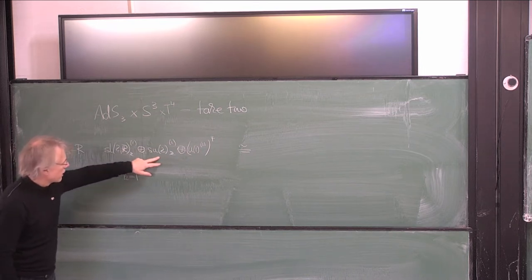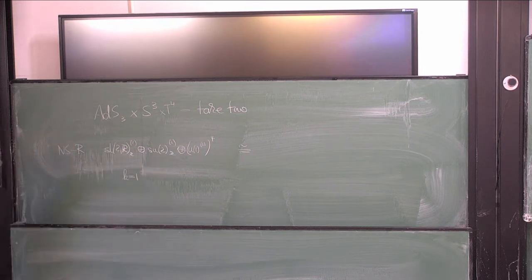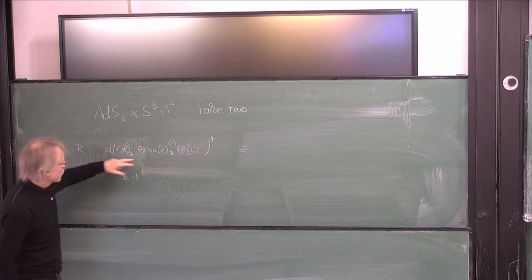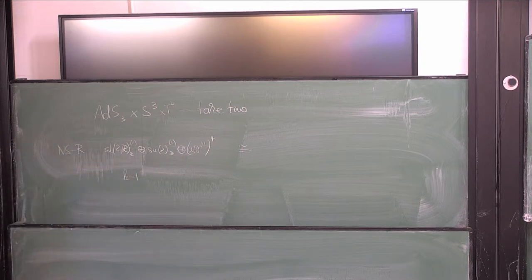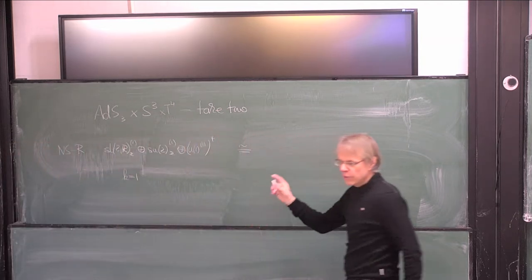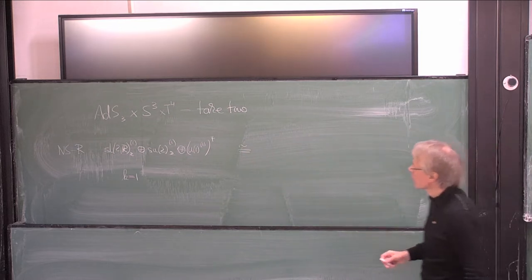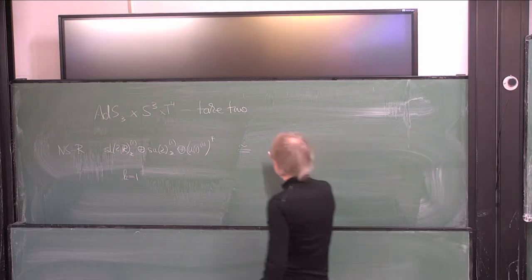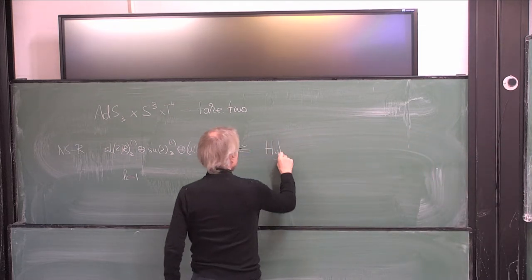There were basically two problems. First of all, this theory is a bit delicate at level 1 because once you decouple the fermions, it gets minus 1 and then we couldn't really understand which representation we should keep — there were a few things that were a little bit dodgy. So today what we're going to do is use another formulation for string theory on AdS3 cross S3 cross T4, which is the so-called hybrid formalism.